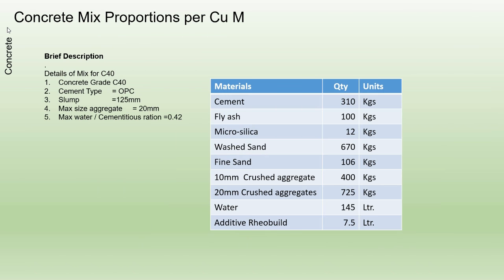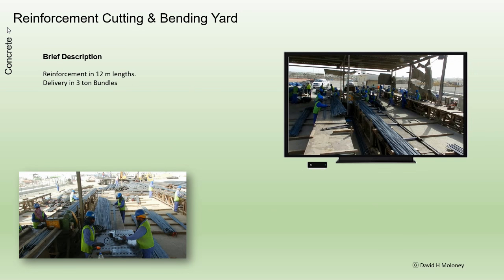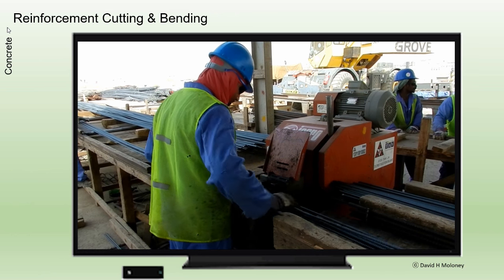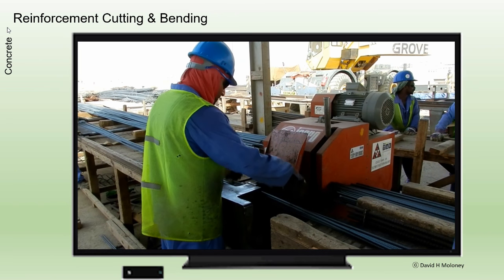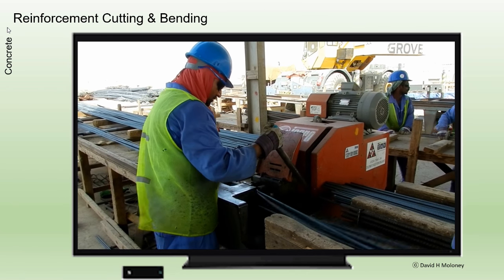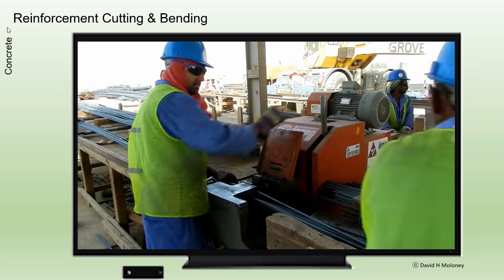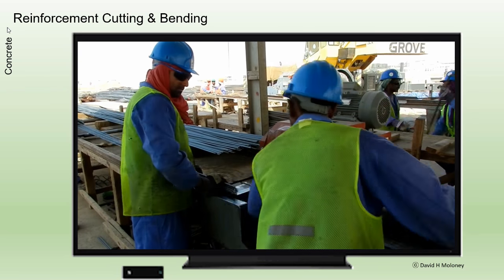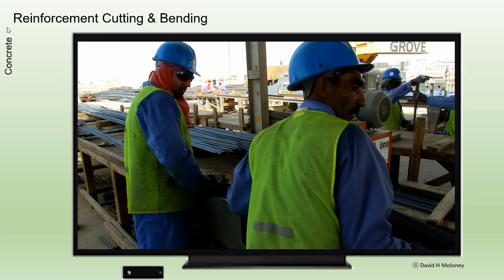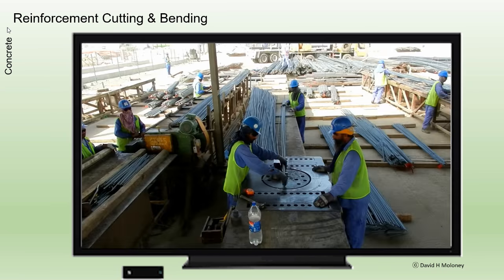Concrete mix. Reinforcement cutting and bending: reinforcement bars in 12-metre lengths are delivered in 3-tonne bundles. The bars are cut and bent to the required shapes.